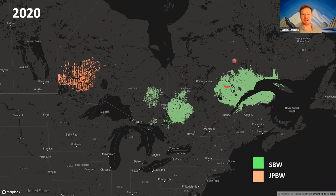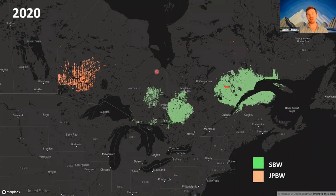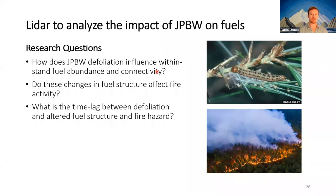These are huge areas affected by insects — fires in 2020 are these little red marks, and in terms of area affected the insects definitely win for 2020. We're curious: what do these huge areas affected by insect outbreaks and presumably altered stand structure mean for fire hazard? The specific question relates to how jack pine budworm and spruce budworm defoliation influence within-stand fuel abundance and connectivity, whether these changes affect fire activity, and what the time lag is between defoliation and altered fire hazard.